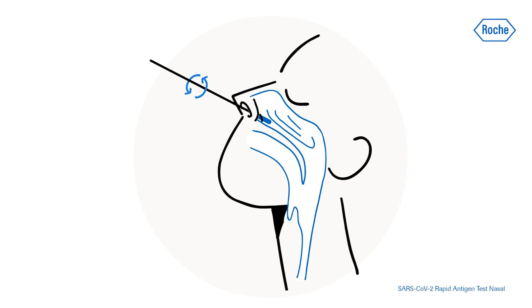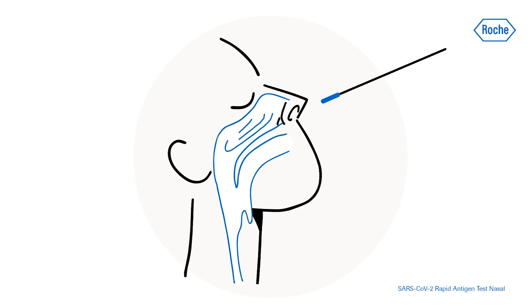Slowly rotate the swab in a circular path against the nasal wall at least four times for a minimum of 15 seconds. Repeat this with the same swab in the other nostril.